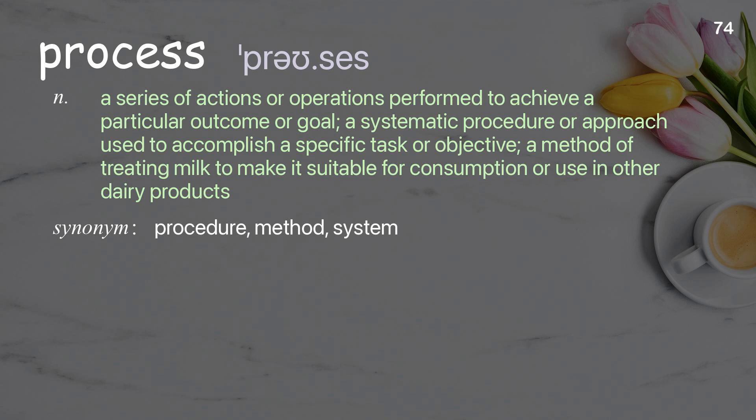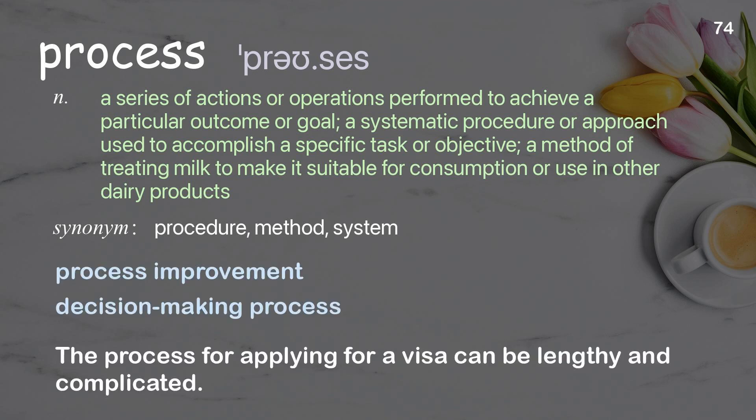Process. A series of actions or operations performed to achieve a particular outcome or goal; a systematic procedure or approach used to accomplish a specific task or objective. Examples: process improvement, decision-making process. The process for applying for a visa can be lengthy and complicated.